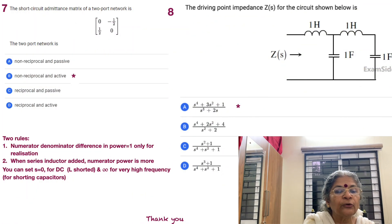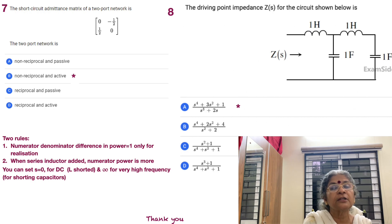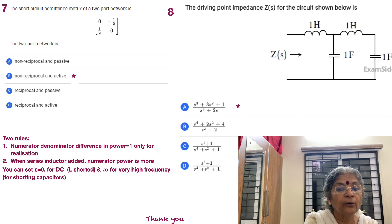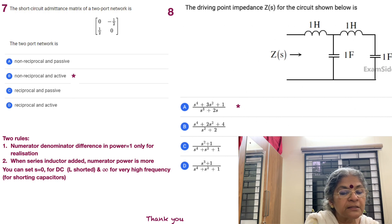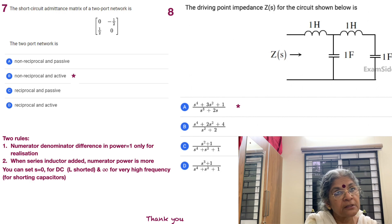Moving to the last slide — the last session, last section, first module. The short-circuit admittance matrix of a two-port network is given as: [0, −1; −1/2, 0]. Immediately it is not a reciprocal circuit because Y12 is not equal to Y21. Therefore the two-port network is non-reciprocal. Since reciprocity does not hold, the network is active — that is the reason why it is non-reciprocal. Answer B is correct.